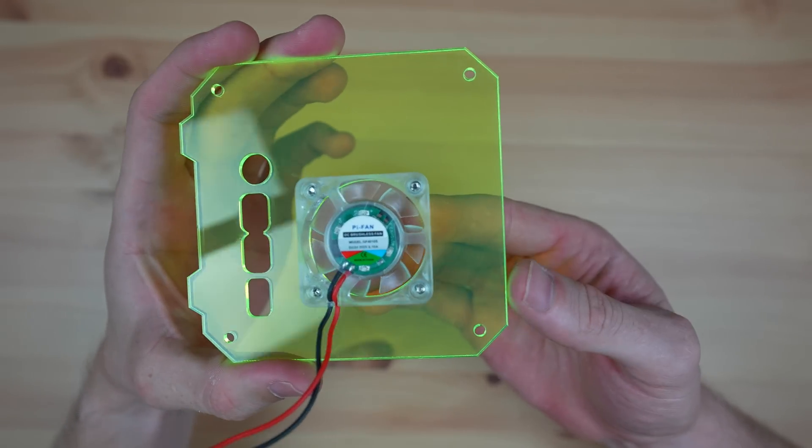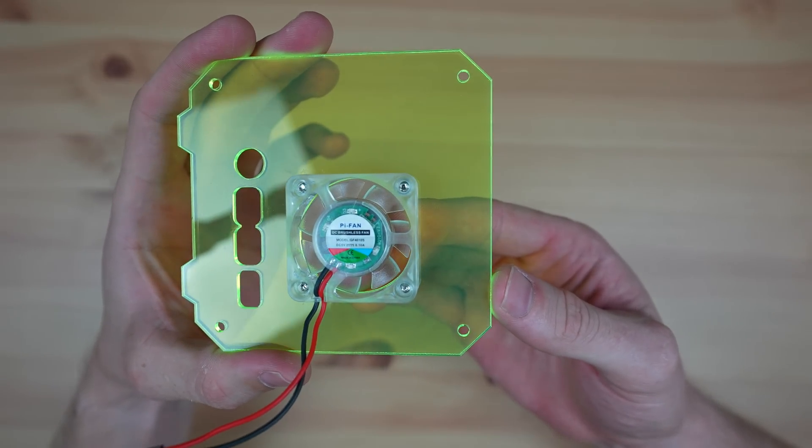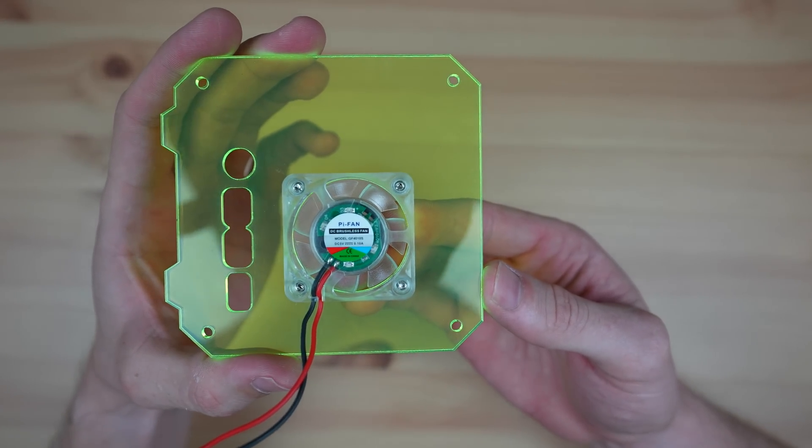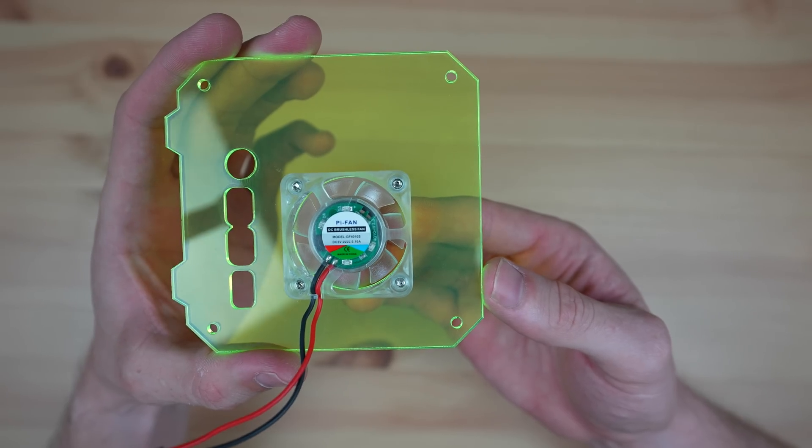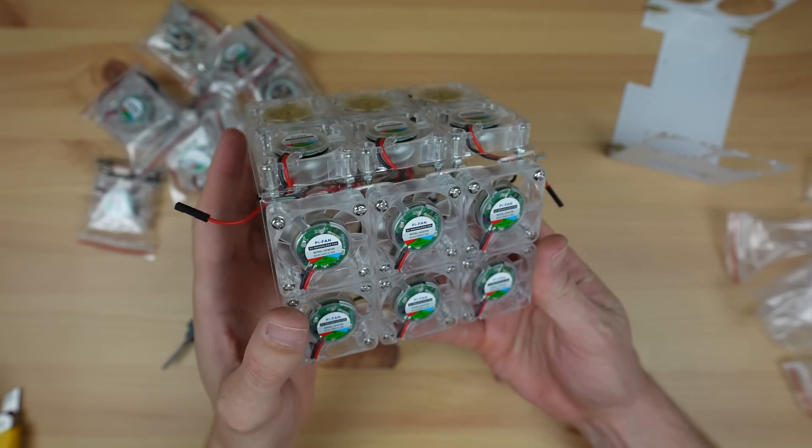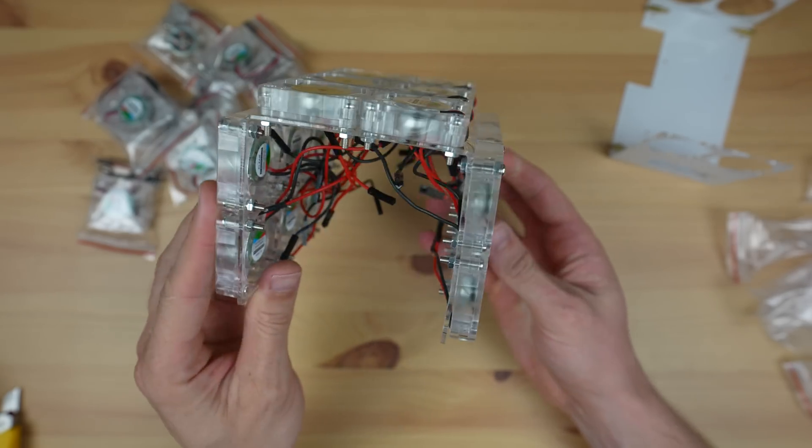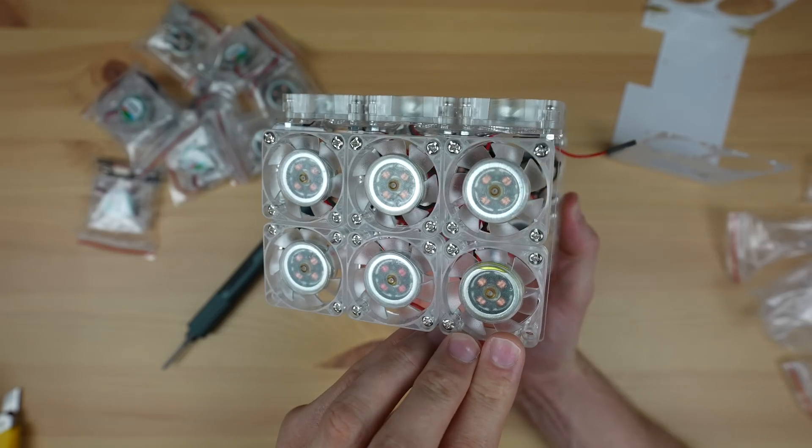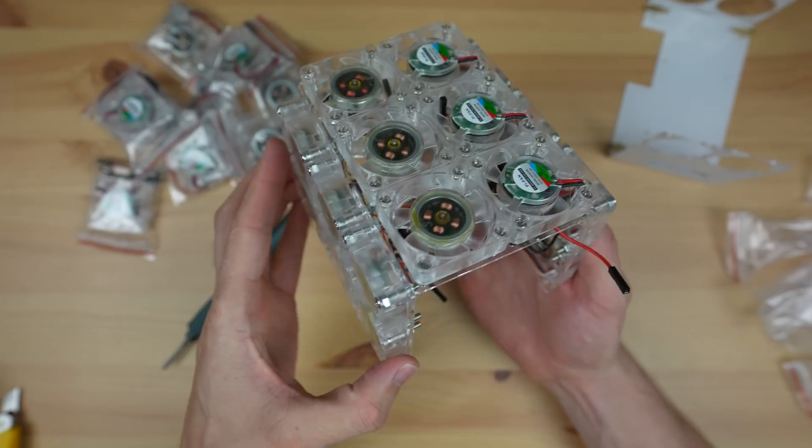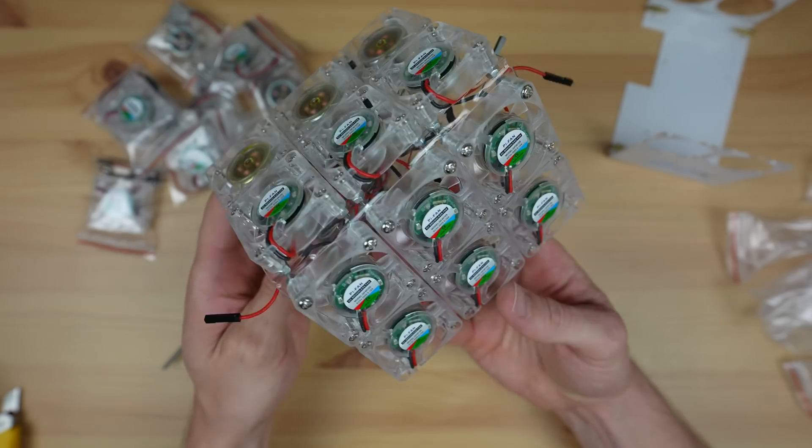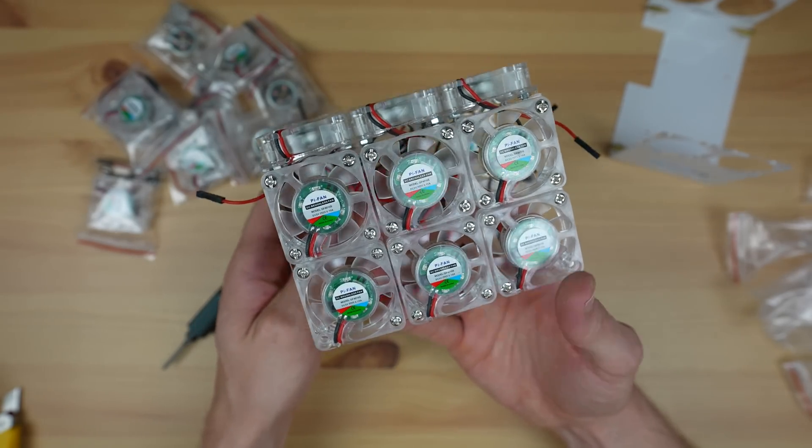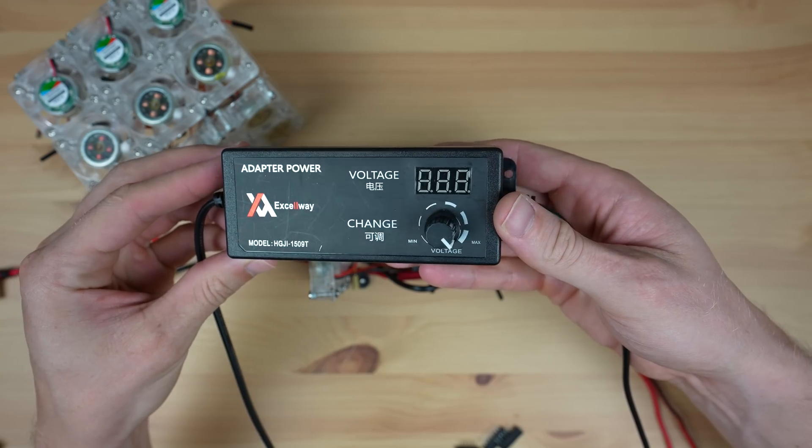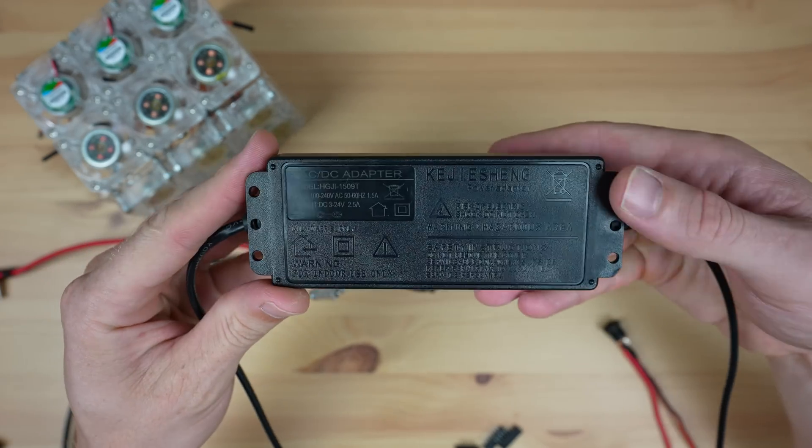The next challenge is how to power the fans. Each one runs on 5 volts and draws around 0.1 amps. They run individually on the Pi's GPIO pins, but when there's 24 of them we easily exceed the capacity of the Pi. We probably even exceed the USB-C power supply's capacity with the Pi running as well. So I have to rig up another power supply just to run the fans. This power supply can do 5 volts and 2 and a half amps, which is perfect.